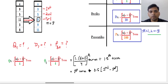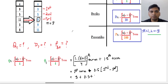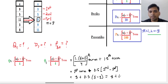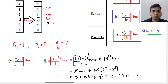So we write: Q1 = 1st term + 0.5 × (2nd term − 1st term). The 1st term is 3, the 2nd term is 5. So Q1 = 3 + 0.5 × (5 − 3) = 3 + 0.5 × 2 = 3 + 1 = 4. Therefore, the first quartile Q1 = 4.